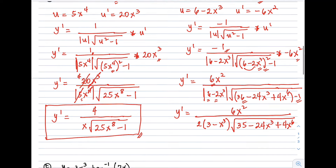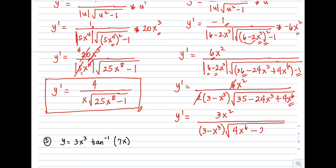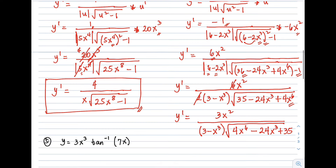Factoring out 2 from (6 - 2x³) gives 2(3 - x³). Dividing 6x² by 2 gives 3x². Rearranging the radicand with 4x⁶ first, the final answer is y prime equals 3x² over ((3 - x³) times the square root of (4x⁶ - 24x³ + 35)).